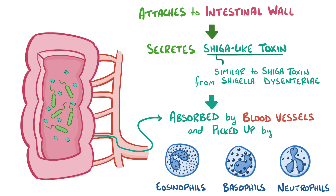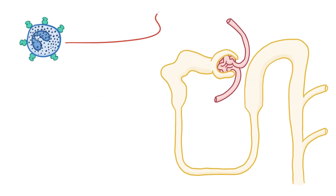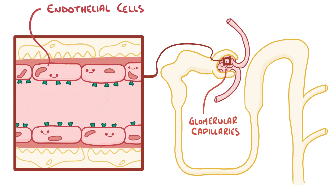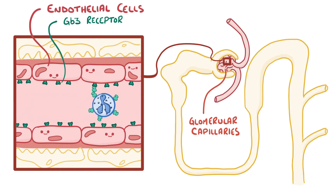From there, the toxin is carried on the surface of these immune cells to the site of blood filtration, which is the glomerular capillaries of the kidney. Endothelial cells lining these glomerular capillaries express a glycolipid receptor called globotriosyl ceramide, or GB3 receptor, that has an incredibly strong affinity for shiga-like toxin. The receptor is like a little magnet that can simply snatch the toxin away from a white blood cell as it drifts by.